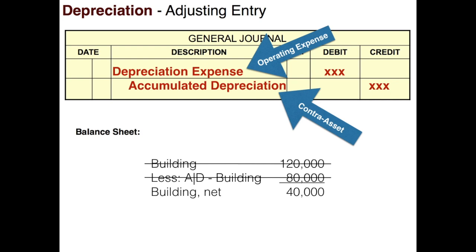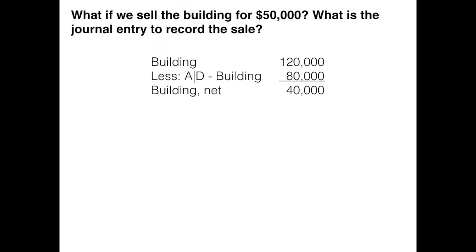What if we sold this building for $50,000? The immediate thinking might be that the building is on the books at $120,000 so we made $70,000 — but be careful, you've used up this building over many years and depreciated it $80,000, so its actual book value is $40,000. To record the sale, we need to take the building off the books and everything associated with it, including its contra account. Wherever the building goes, the accumulated depreciation account associated with it has to go with it.